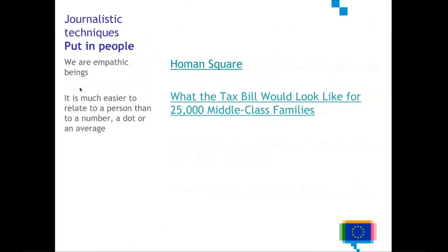Another technique is what I call 'put in people.' Whenever you are telling a story with data and visualizations, usually what people see is quite abstract — they see dots on a map or bars on a bar chart, which is not something you can empathize with. Humans are empathic beings, so if you manage to put in real people and their stories, you will get higher engagement from the reader. It's much easier to relate to a person than to a number of dots or an average.